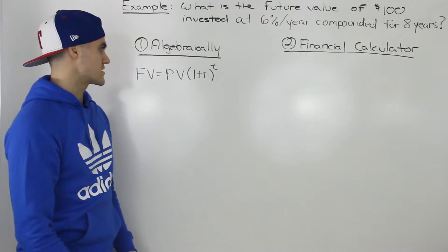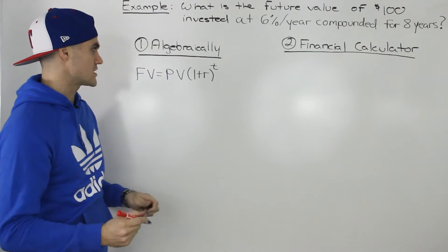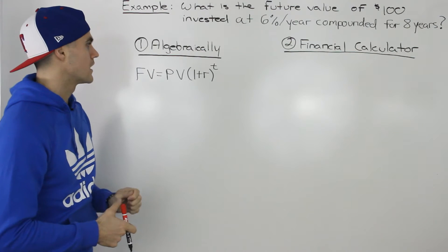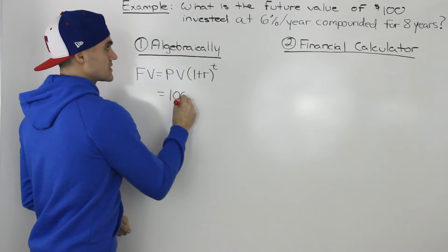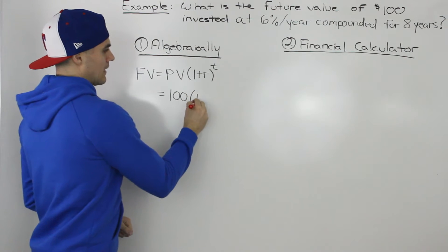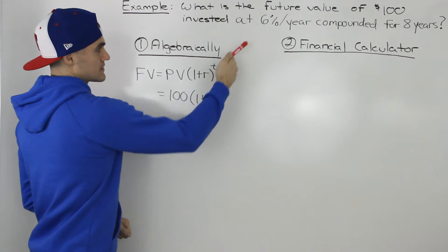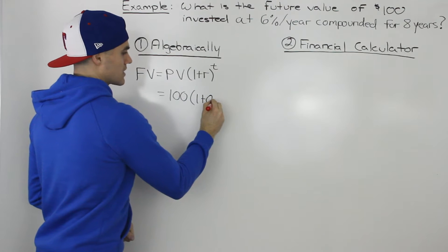So algebraically, it's pretty simple. We would just use that formula that we introduced in the previous video. So the present value is what we're investing, so it's the $100, and then the interest rate, it's 6% per year and it's compounded.